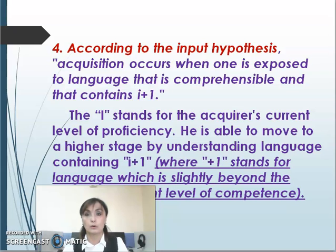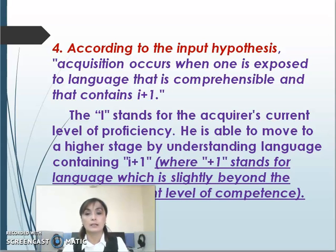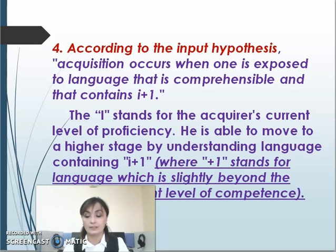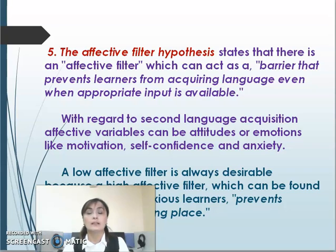According to the input hypothesis, acquisition occurs when one is exposed to language that is comprehensible and contains 'i plus one,' where 'i' stands for the acquirer's current level of proficiency. The learner is able to move to a higher stage by understanding language containing 'i plus one,' where 'plus one' stands for language which is slightly beyond the acquirer's current level of competence.